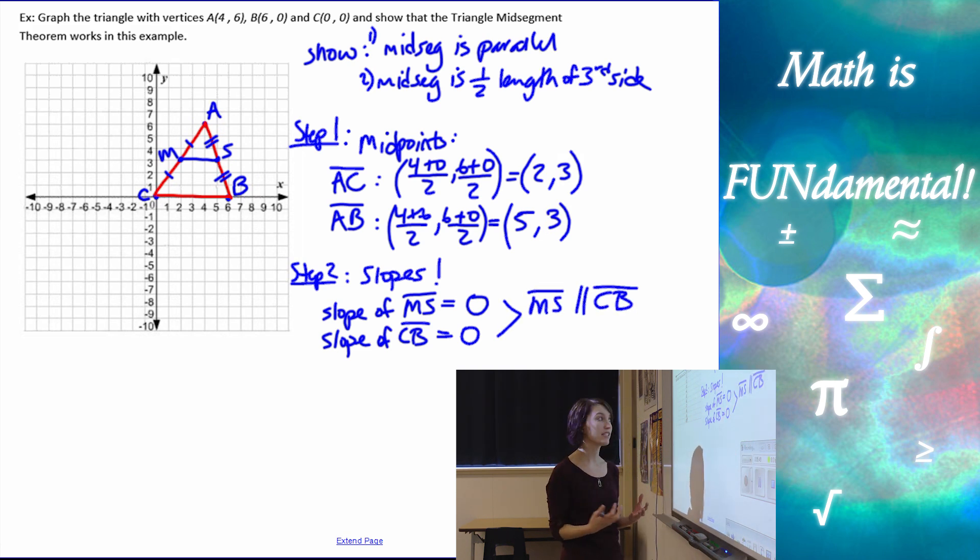But I'm just going to take those two pieces of information and state that MS is parallel to CB. Alright, so that's one piece of my theorem. My last piece of the theorem, we'll put step 3 on here. I need to show that it's half of the length, so I need to find the lengths.